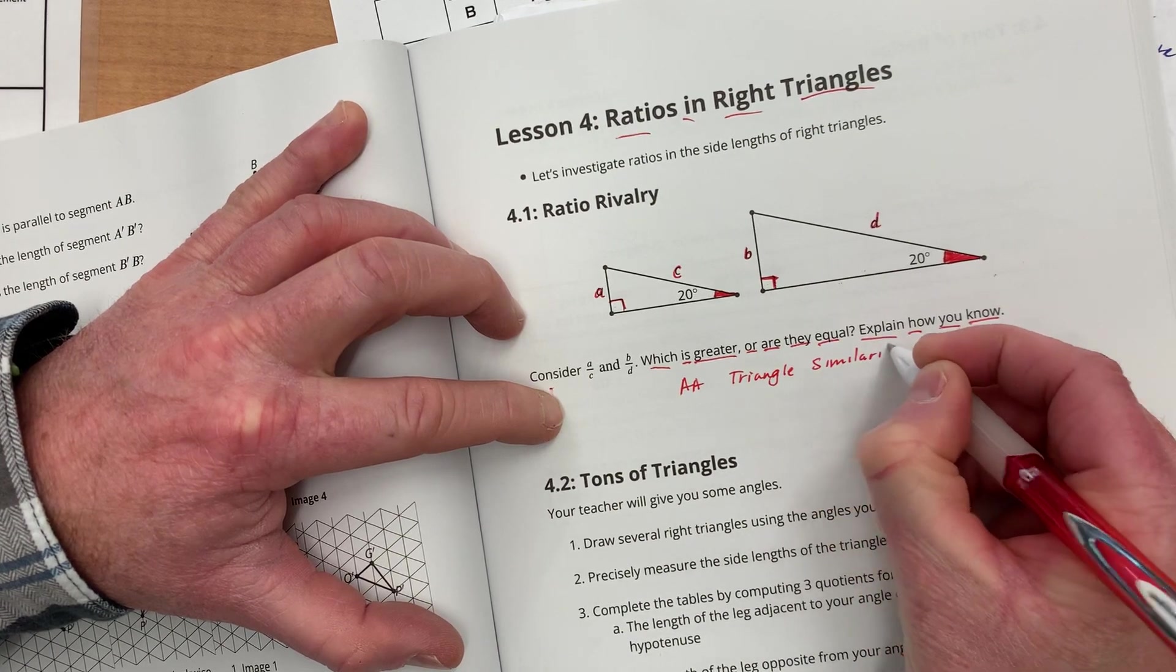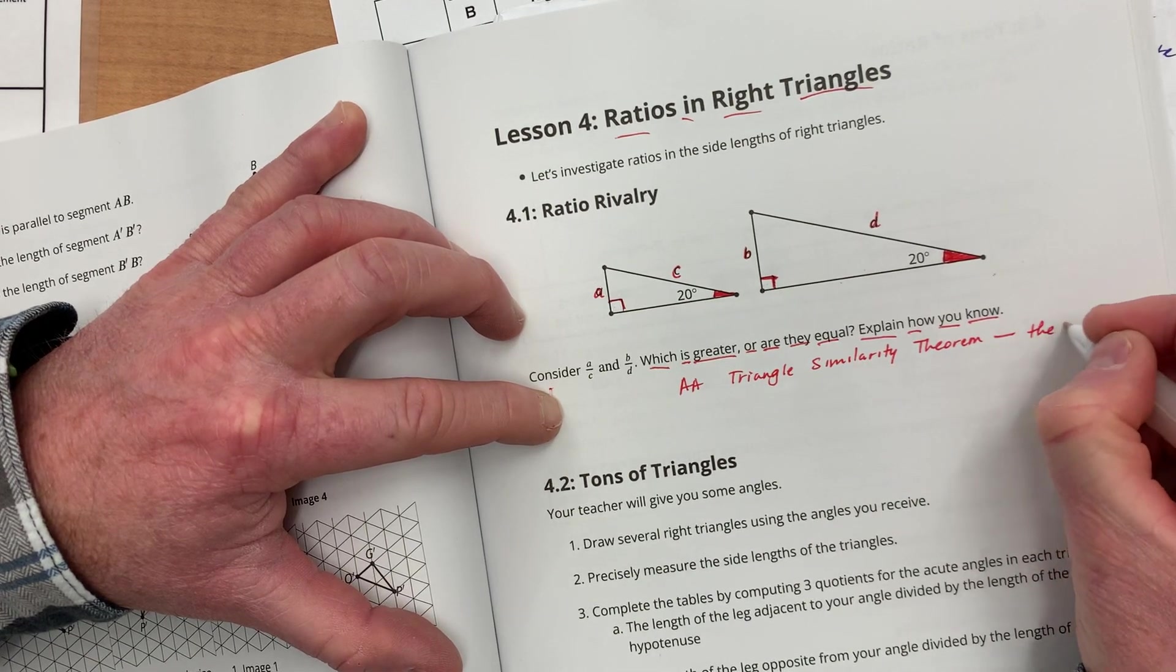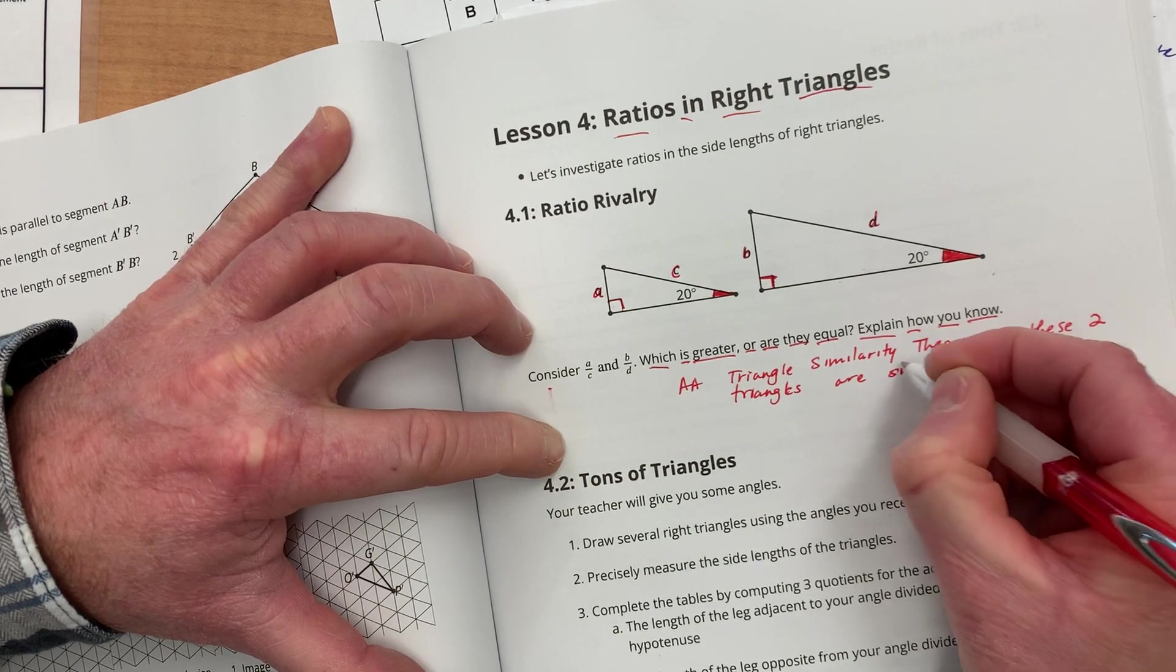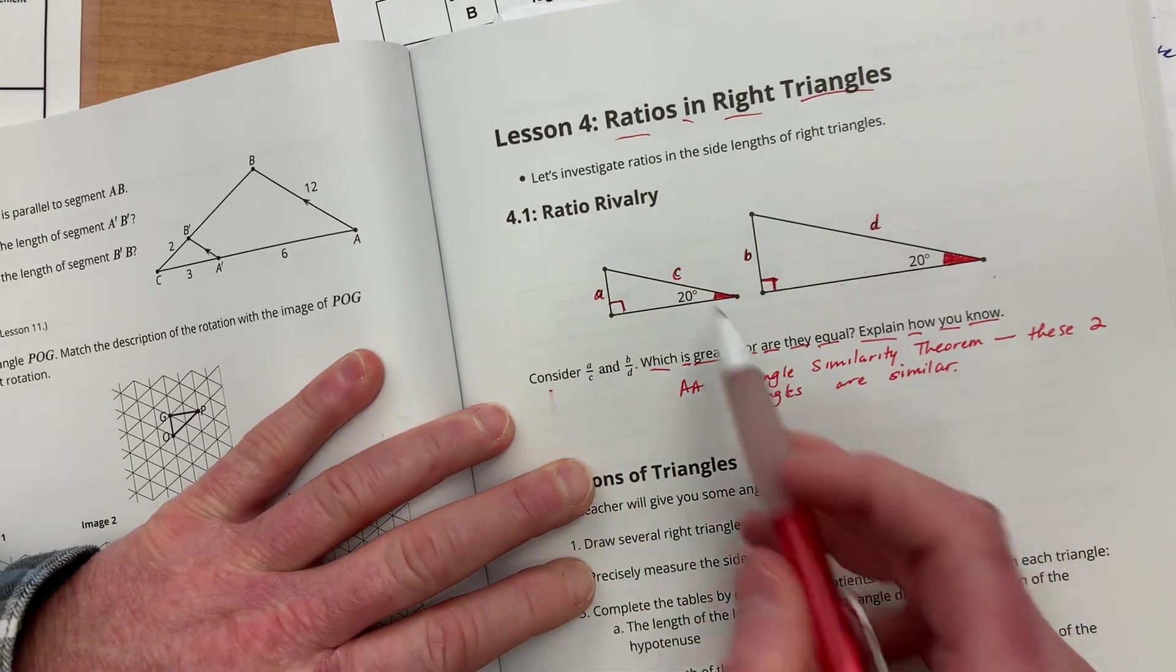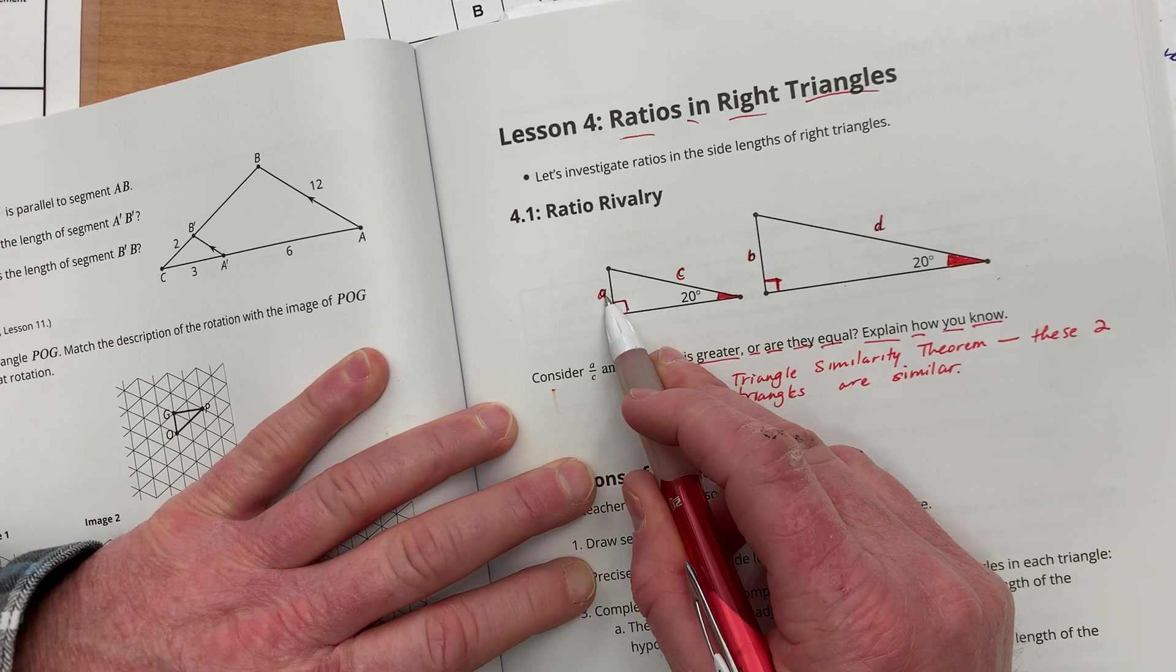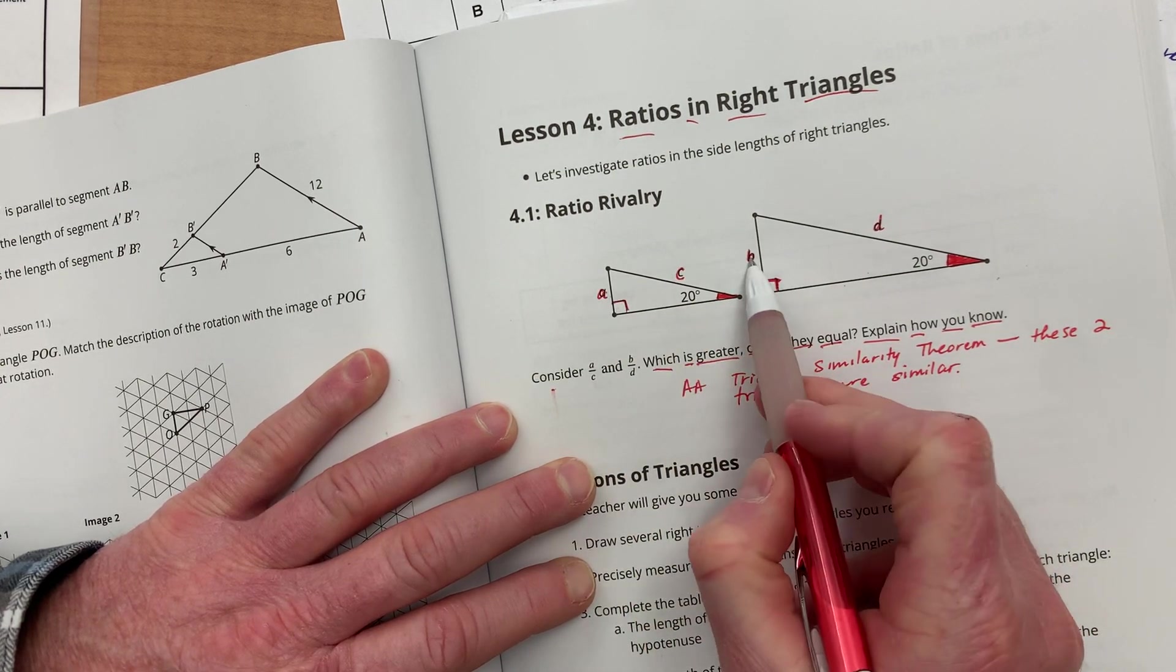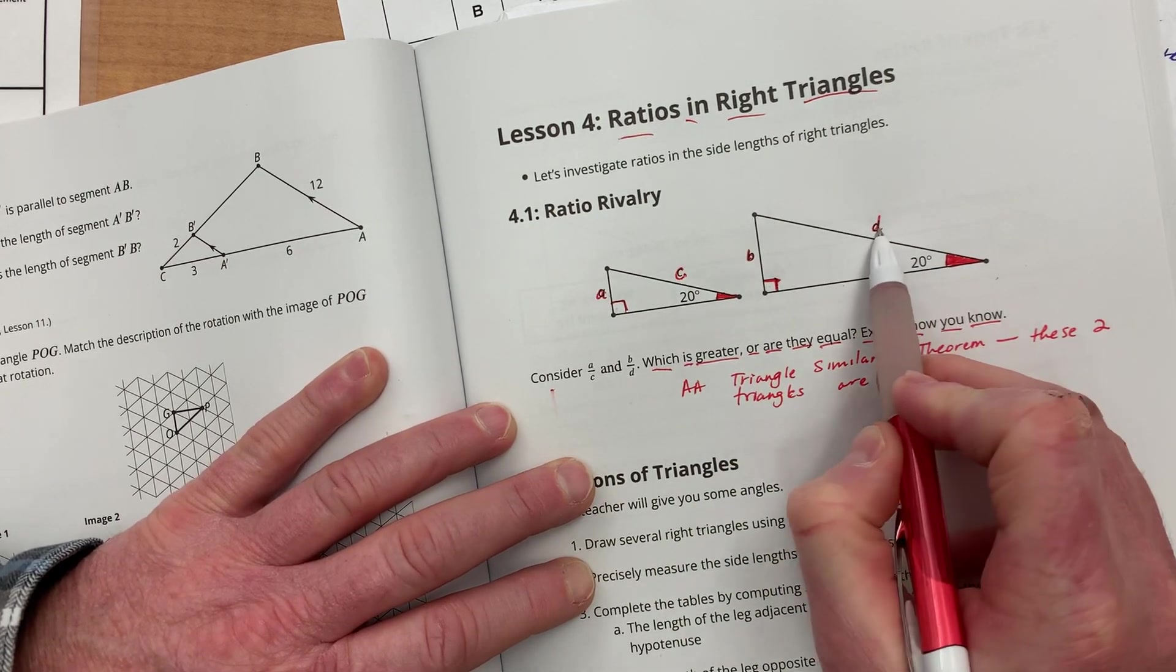...that these two triangles are similar. Now, I also know that in similar triangles, the ratio of A to B is going to be the exact same as the ratio of C to D.